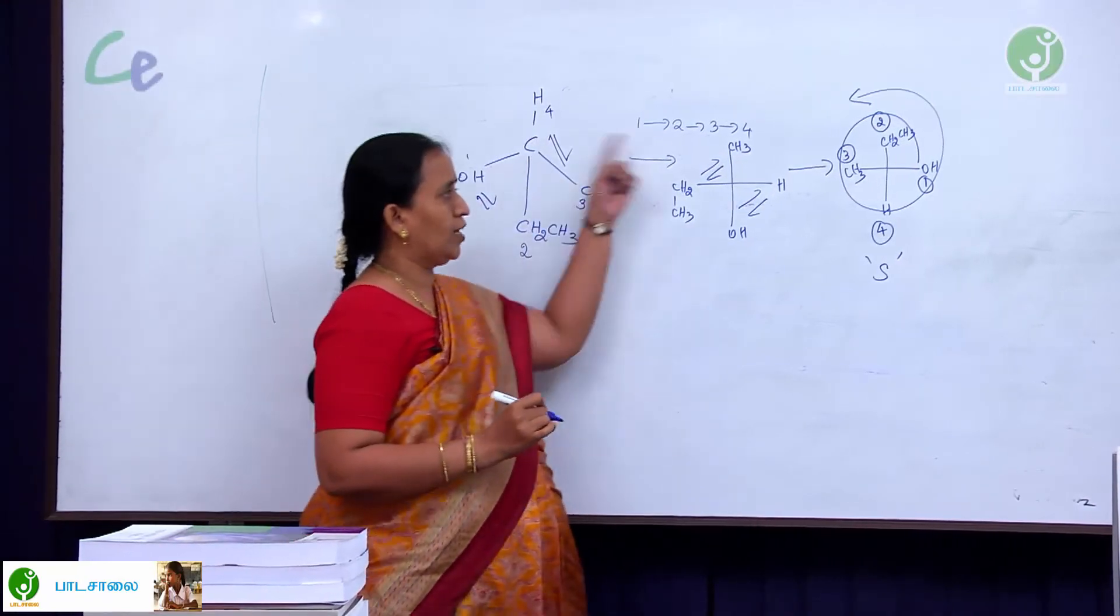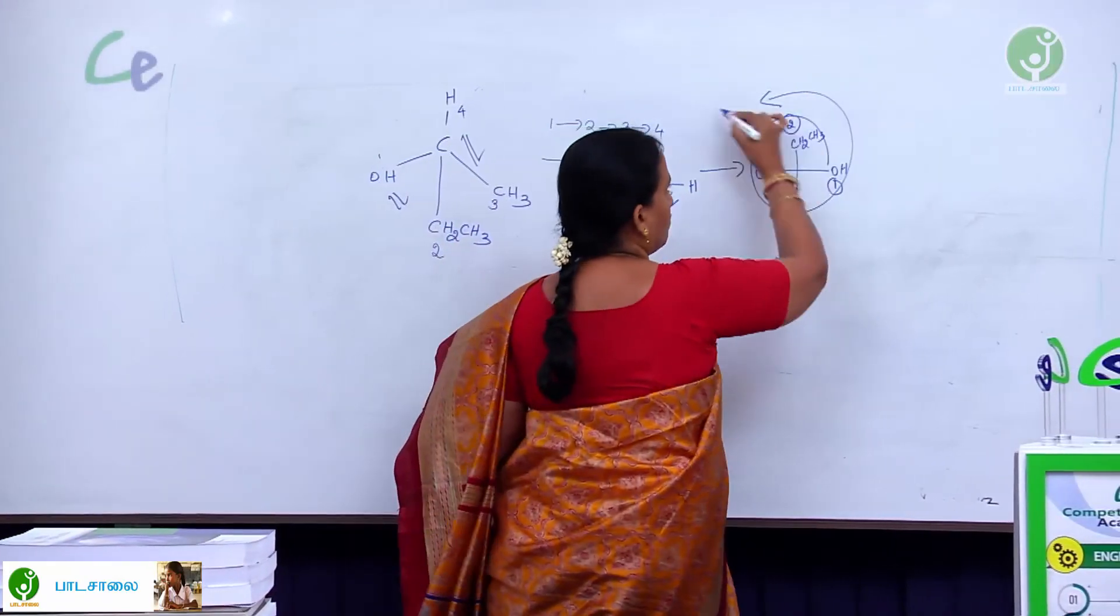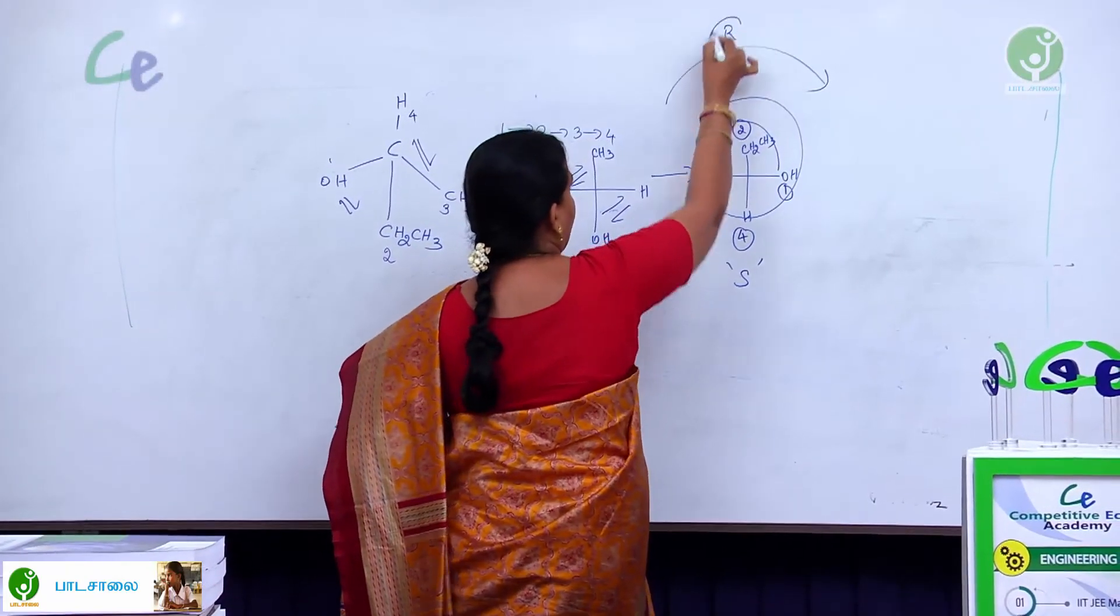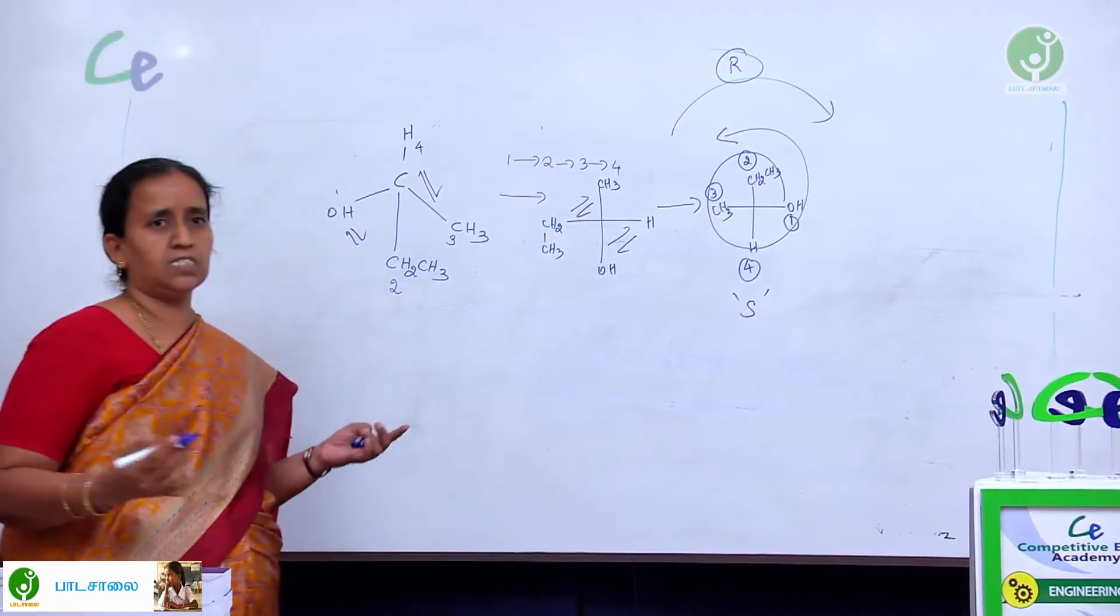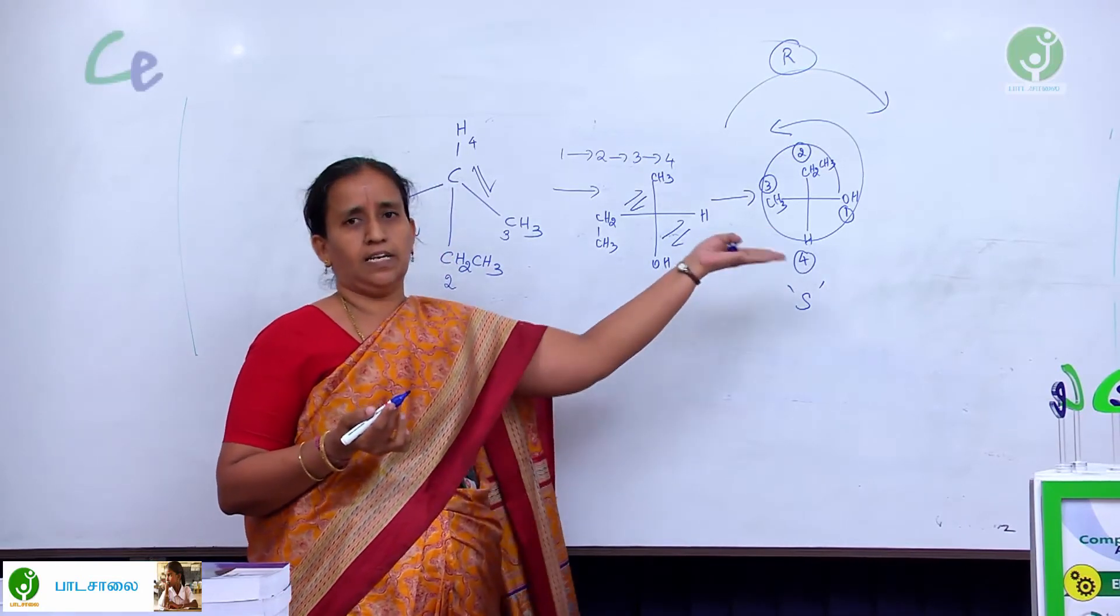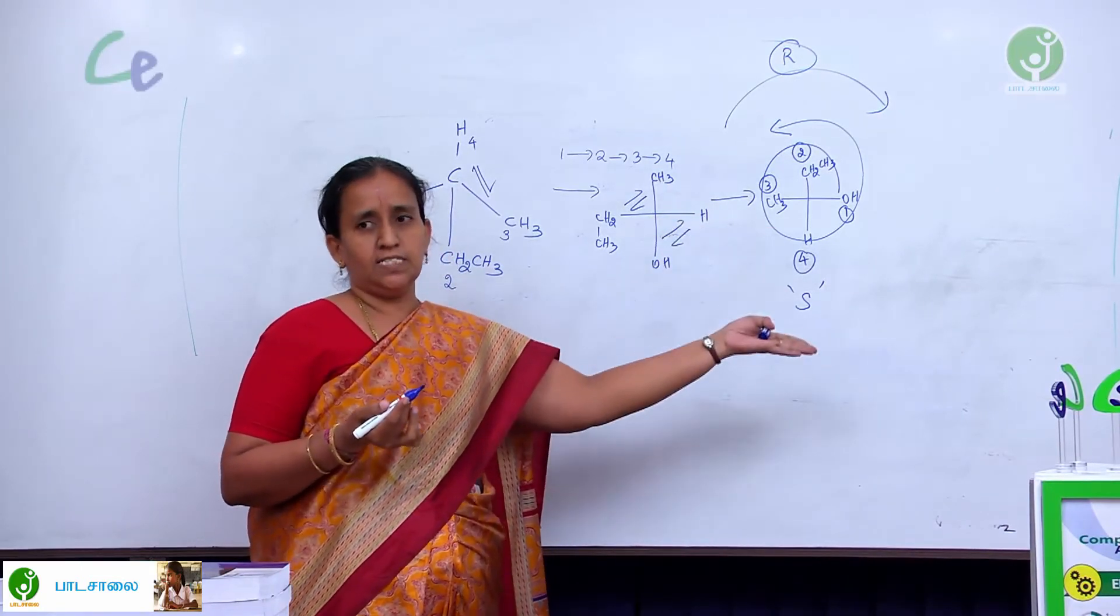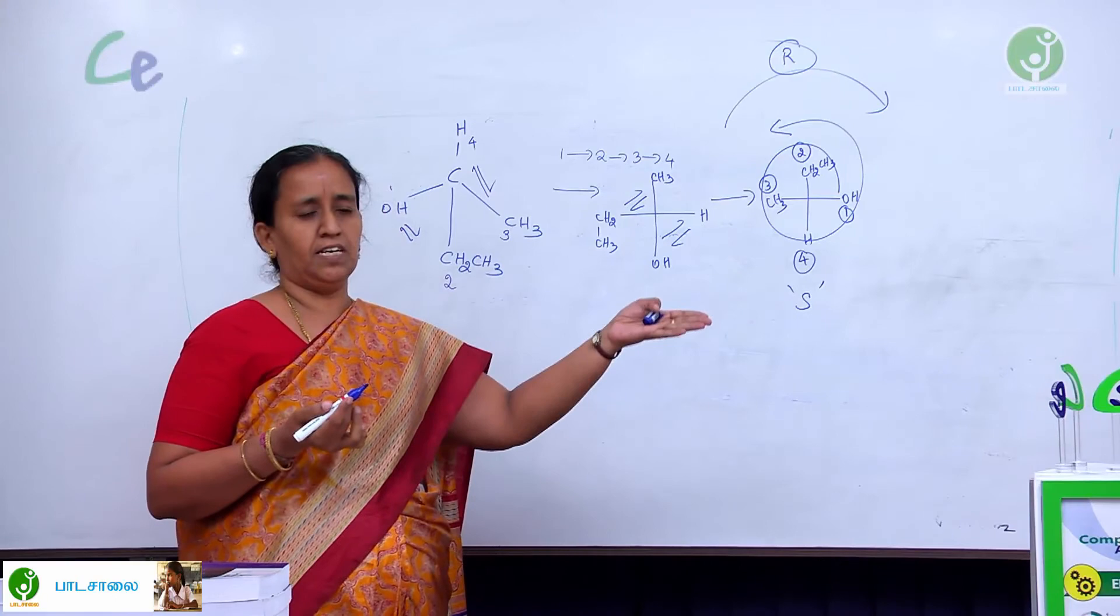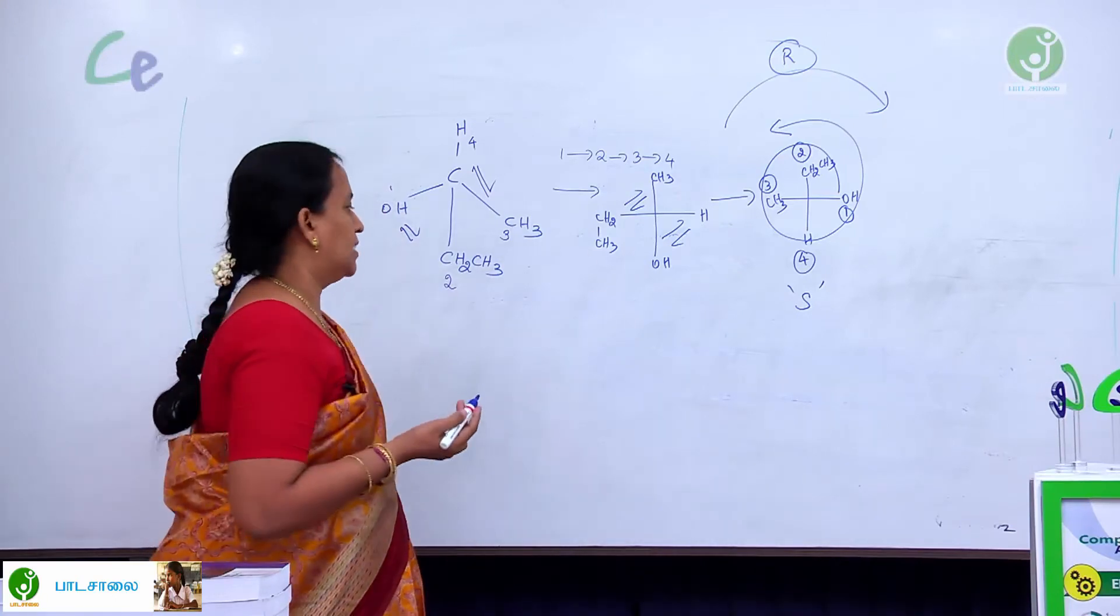Suppose, when I am doing the rotation, if it comes in the clockwise rotation, then I can assign the molecule as R. This is the very simple system. I can identify whether the given molecule is R or S. Hope you can understand this R and S rotation very clearly. Now, we can go for some example.